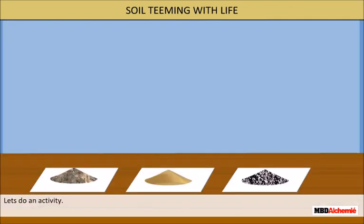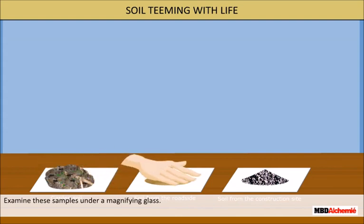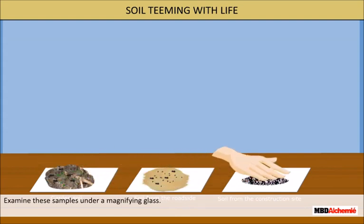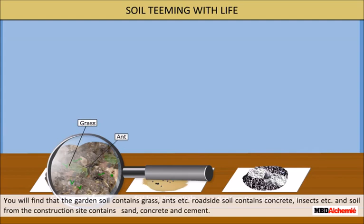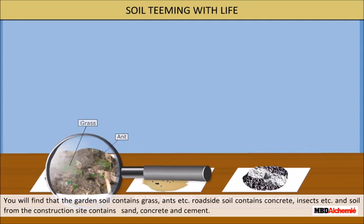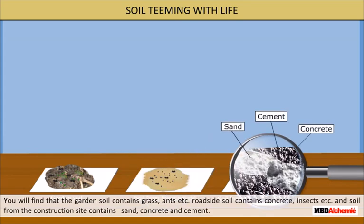Let us do an activity. Collect some samples of soil from different places such as a garden, roadside and construction site. Examine these samples under a magnifying glass. You will learn that the garden soil contains grass, ants etc. Roadside soil contains concrete, insects etc. And soil from the construction site contains sand, concrete and cement.